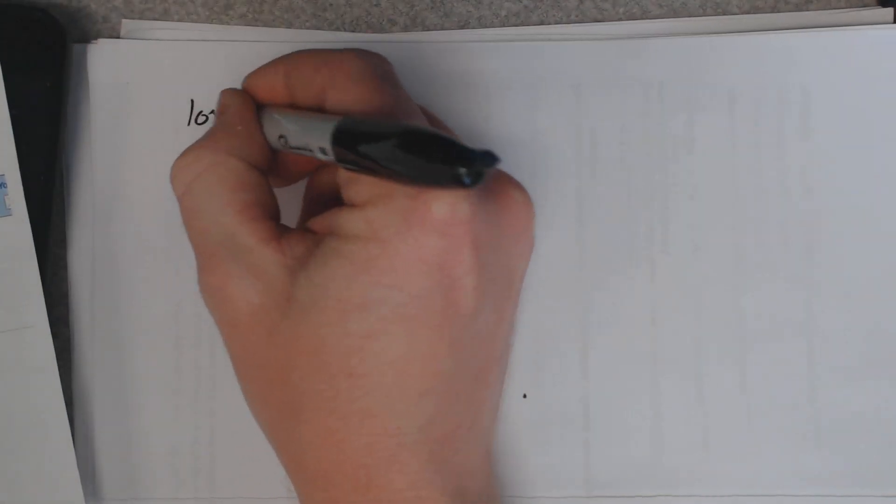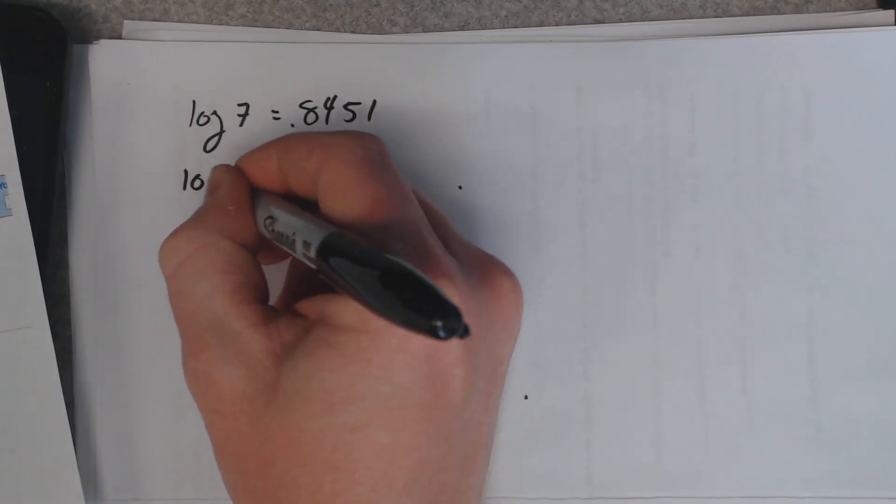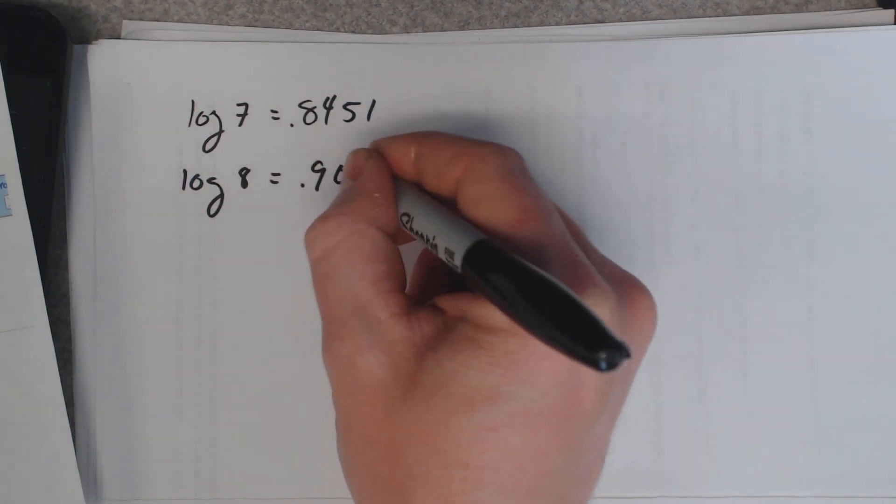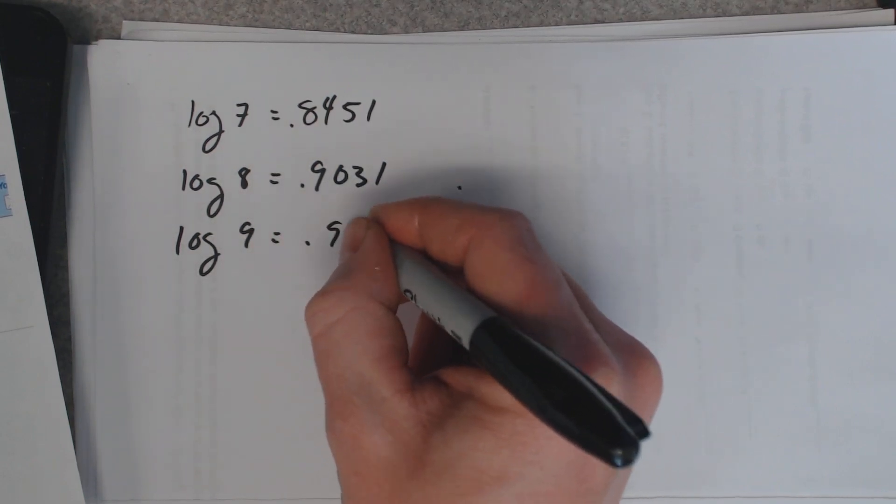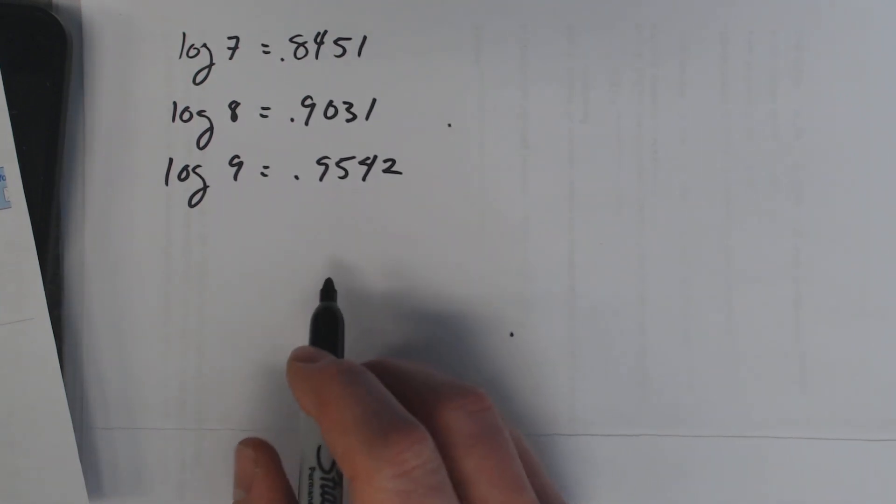Now they give us another one trying to approximate logarithms. They give us that log 7 is 0.8451, log 8 is 0.9031, and log 9 is 0.9542. We're going to use those values to approximate log of 567/72.